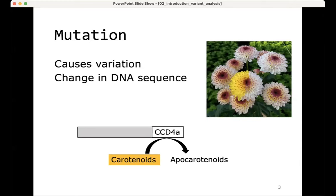Here's an example of a mutation that had an effect on the phenotype. This is a picture from my previous work in flowers, where there's an important gene called CCD4A, which turns yellow carotenoids into colorless apocarotenoids. If that gene is mutated, that conversion does not happen anymore and the flower turns yellow. That's a mutation that has an effect on the phenotype, but many mutations do not.